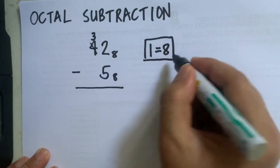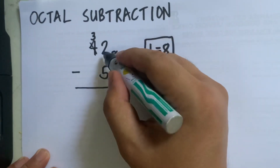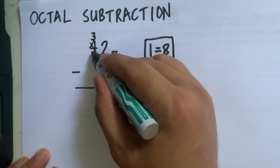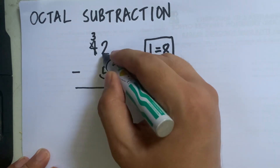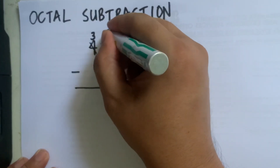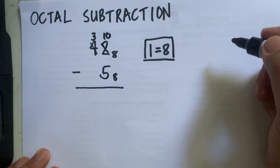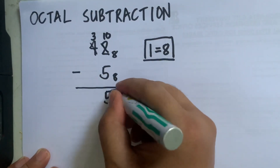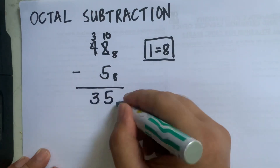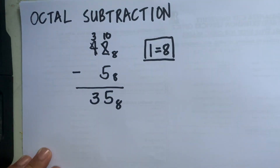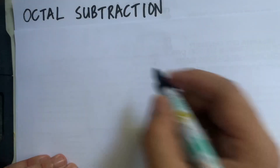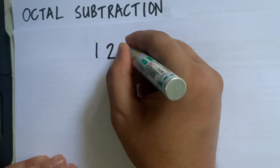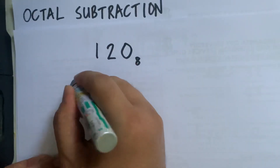Don't forget that. So if 2 borrows 1 from 4, each one borrowed is equivalent to 8, meaning 2 now becomes 10. Then 10 minus 5 is 5, bring down 3, so the answer is 35.